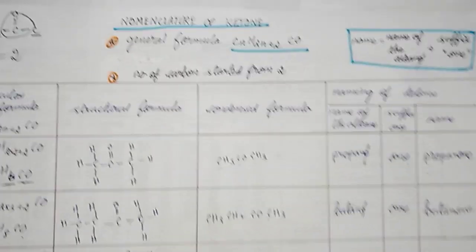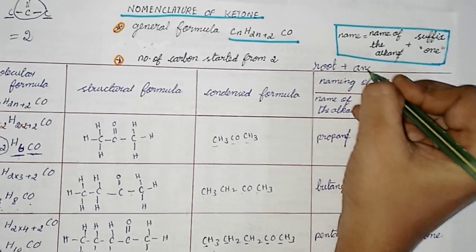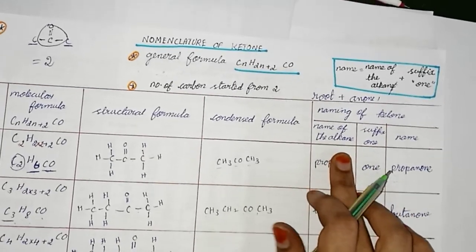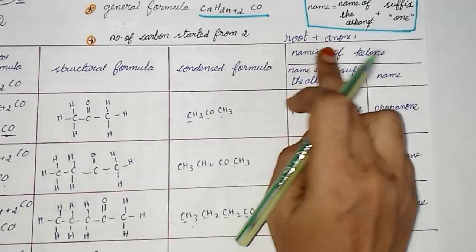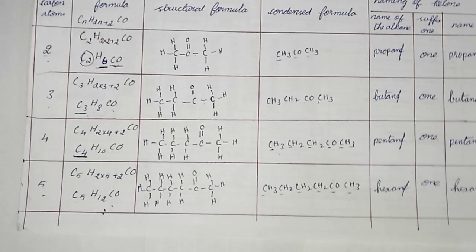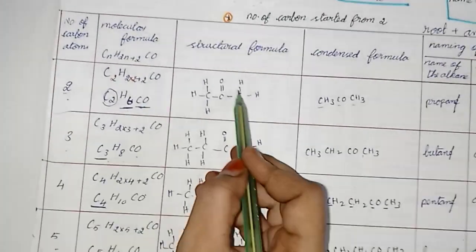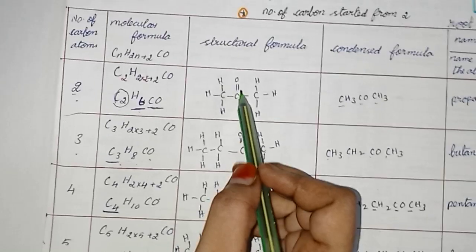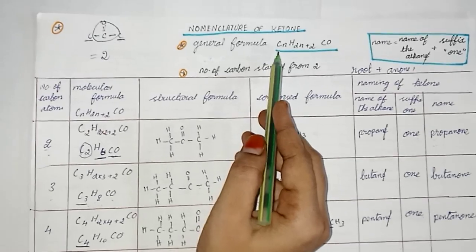The short way to write the name is: root word plus '-anone'. For example, 'prop' is the root word — add 'anone' gives propanone. 'But' is the root word — add 'anone' gives butanone. Root word 'pent' gives pentanone. From an examination point of view, you can easily identify the name. So, the naming of the ketone functional group is now completed. Keep in mind that ketone is entirely different from other functional groups.